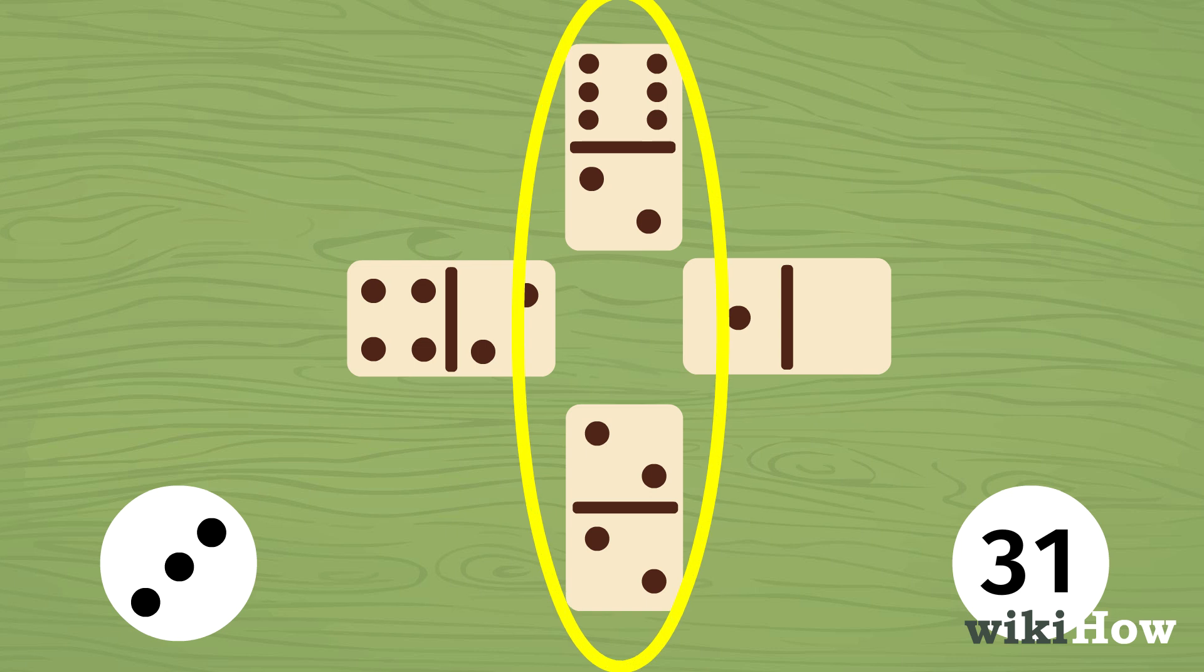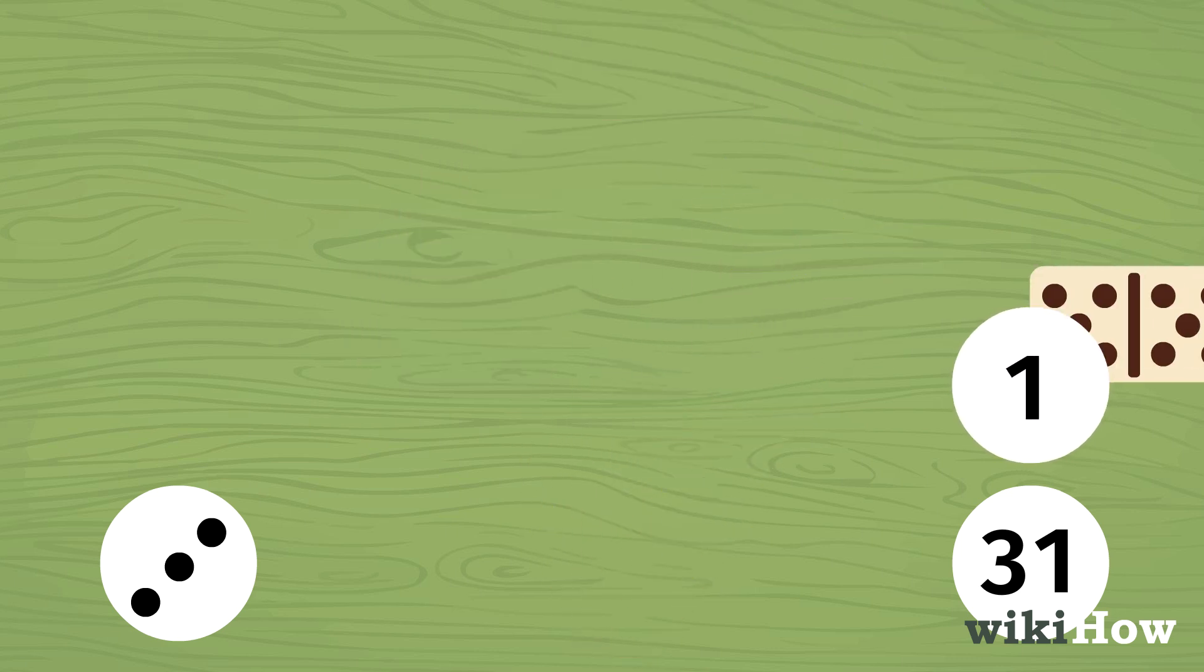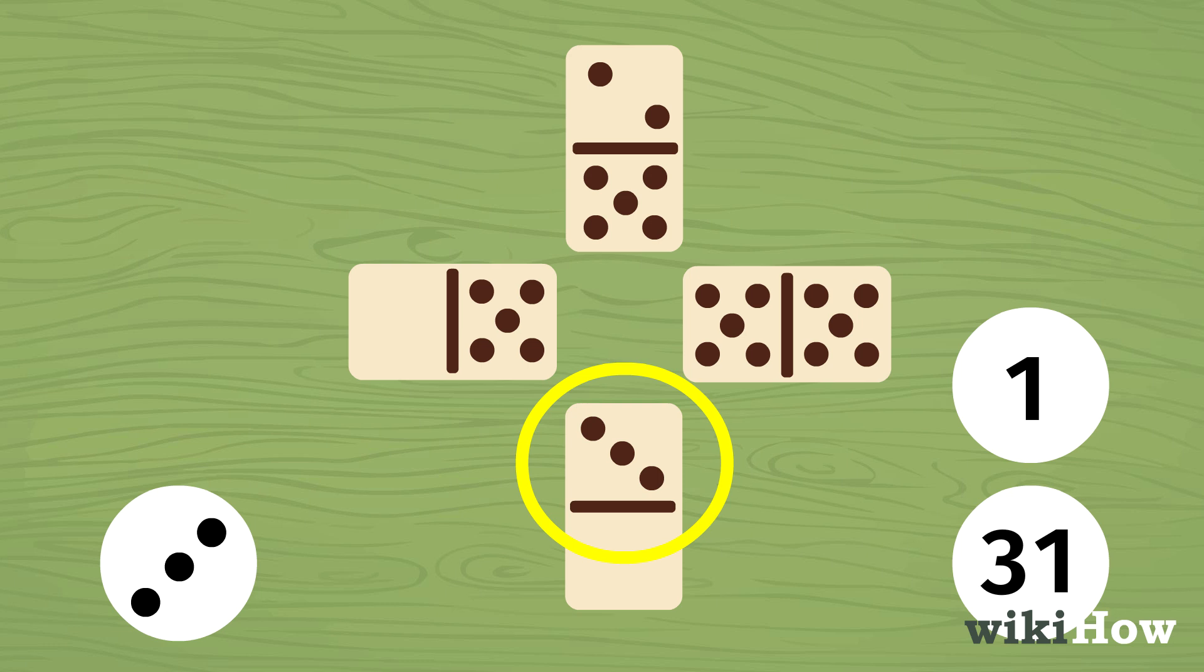Whoever plays the domino with the highest value wins the round. The trump suit always wins, even if it's lower than the lead suit.